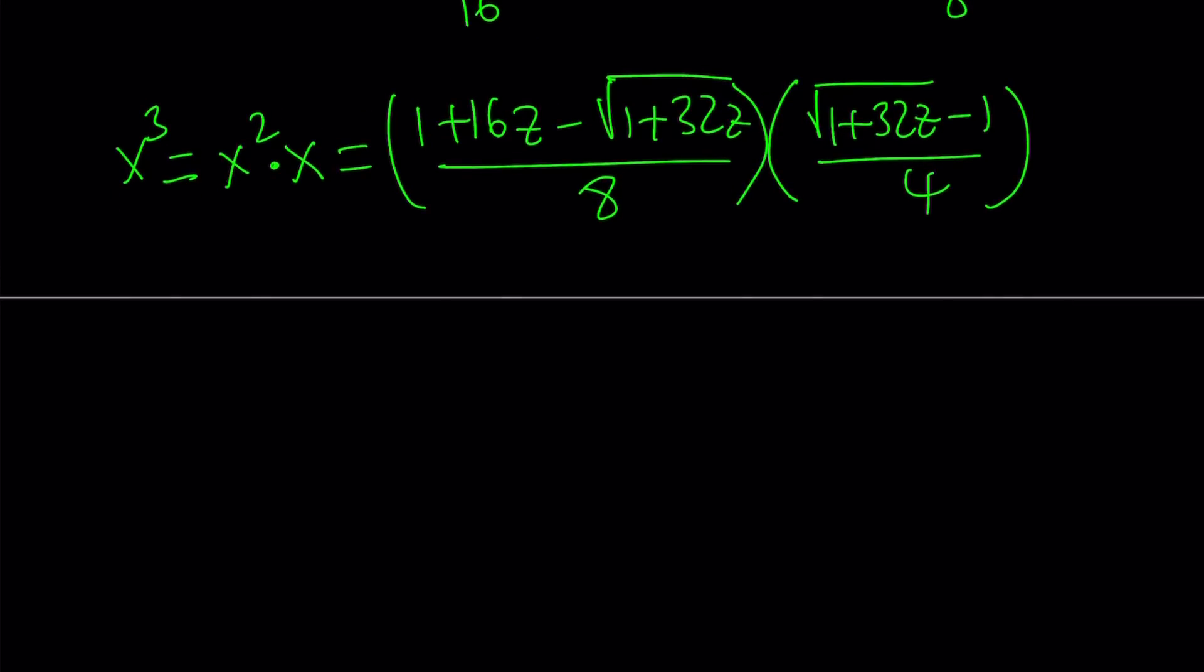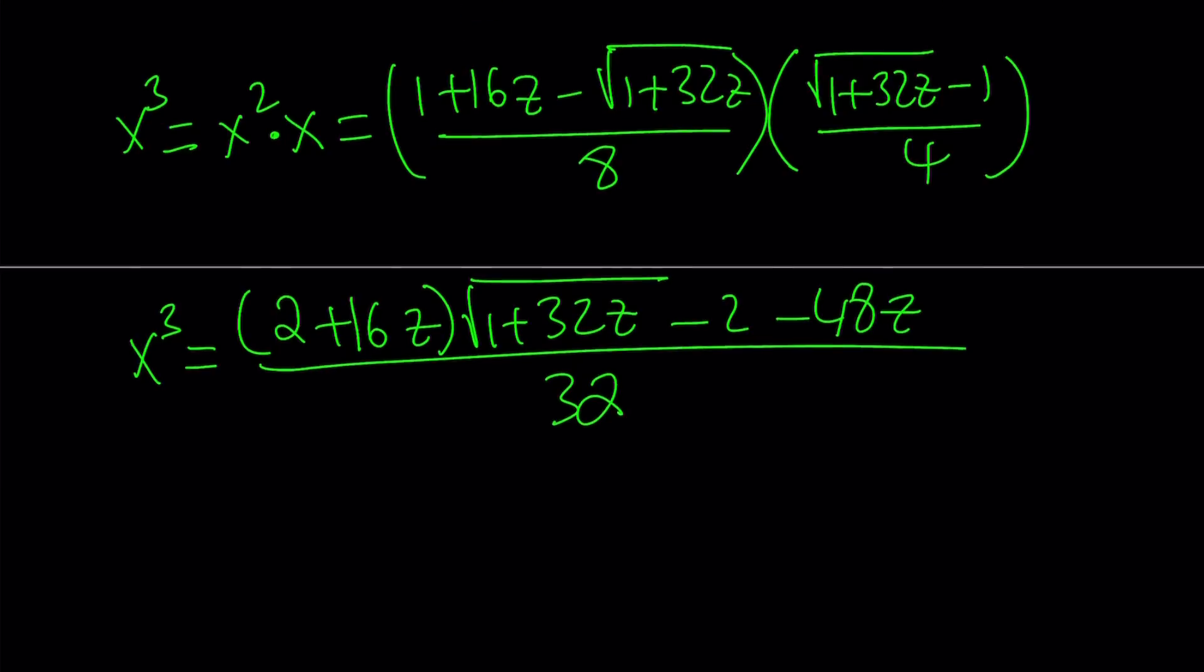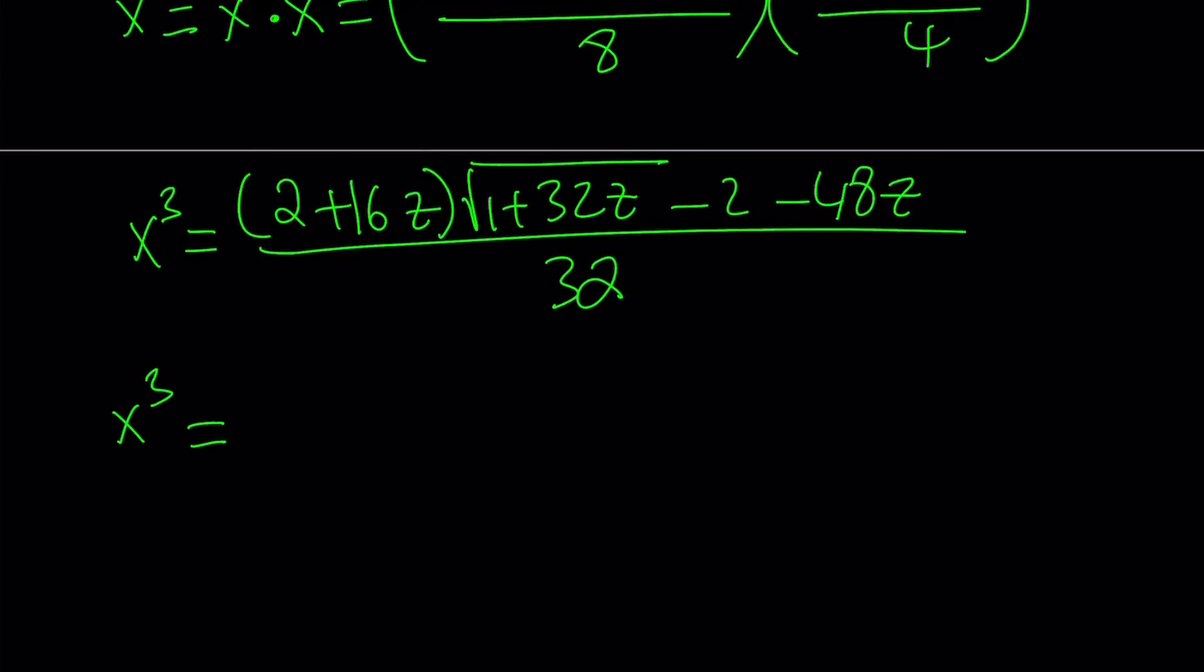This is x cubed. If you distribute, you're going to get something nice, but when you distribute, you're going to have a 32 at the bottom. Let me give you what it is. Without further ado, you get 2 plus 16z, multiply by square root of 1 plus 32z, minus 2 minus 48z, all divided by 32. Now divide by 2. That gives x cubed equals 1 plus 8z times the square root of 1 plus 32z, minus 1 minus 24z, all divided by 16.